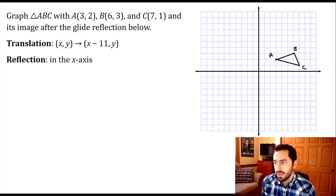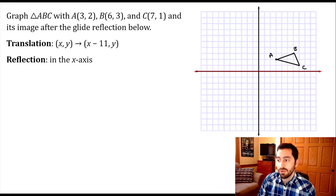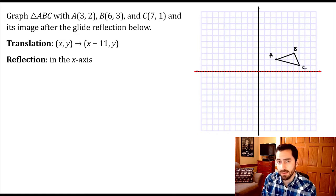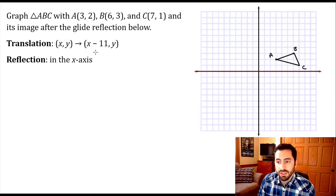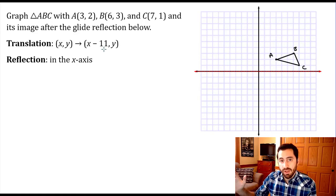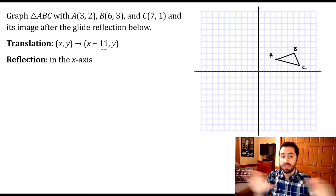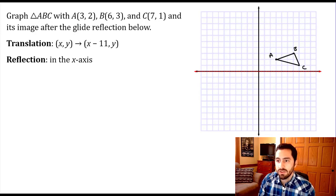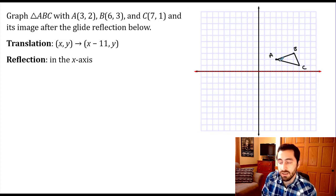Let me connect these together to form our triangle. Taking a look at our translation and reflection: we want to reflect over the x-axis, which is horizontal. To be a glide reflection, we translate parallel to that line, meaning we slide horizontally. Our translation rule is x minus 11 — we subtract 11 from all x-values, sliding everything 11 spaces to the left.